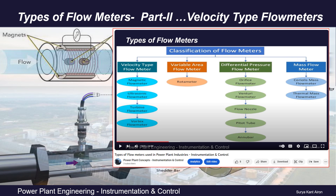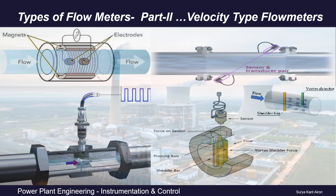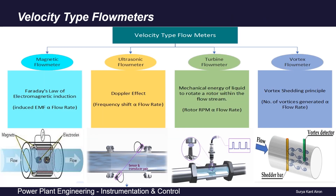The method of velocity measurement may differ from type to type. Based on the method of velocity measurement, we have further classified velocity type flow meters into four categories. The first is magnetic flow meter, also called electromagnetic flow meter or mag flow meter, which is based on Faraday's law of electromagnetic induction.